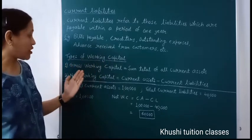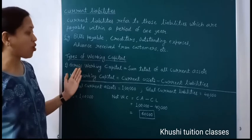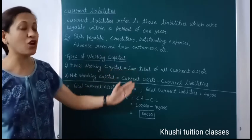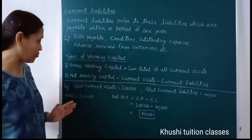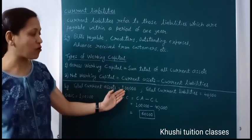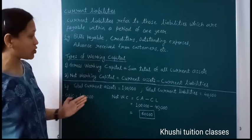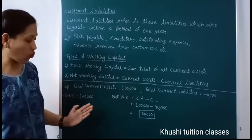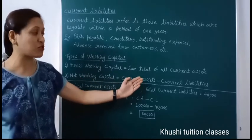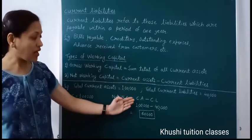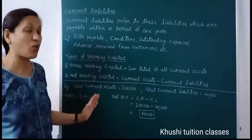Now, types of working capital. There are two types: gross working capital and net working capital. The formula for gross working capital is equal to the sum total of all current assets. For example, total current assets are suppose 1 lakh rupees and total current liabilities are 40,000. So gross working capital equals 1 lakh rupees. The second type is net working capital — the formula is current assets minus current liabilities. Current assets are 1 lakh and current liabilities are 40,000, so the difference is 60,000 — that is our net working capital.